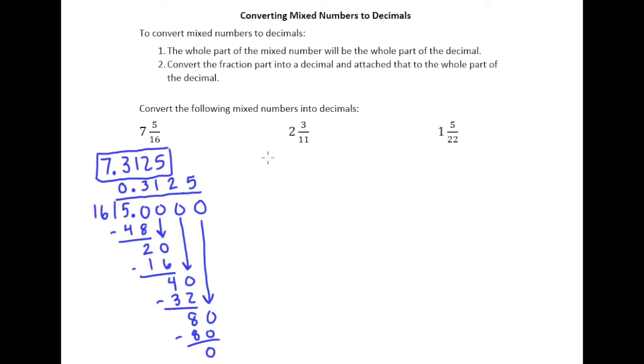So let's look at 2 and 3 elevenths. Again, we're going to have 2 point something. So we're going to take 3 divided by 11. So 11 of course can't go into 3, so we put our decimal point and a 0. 11 goes into 30 twice.